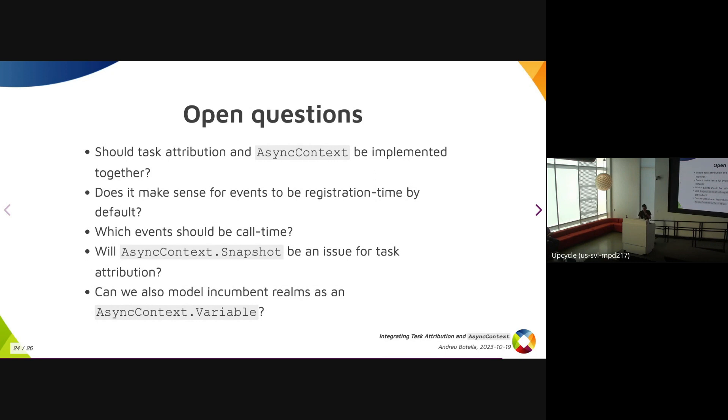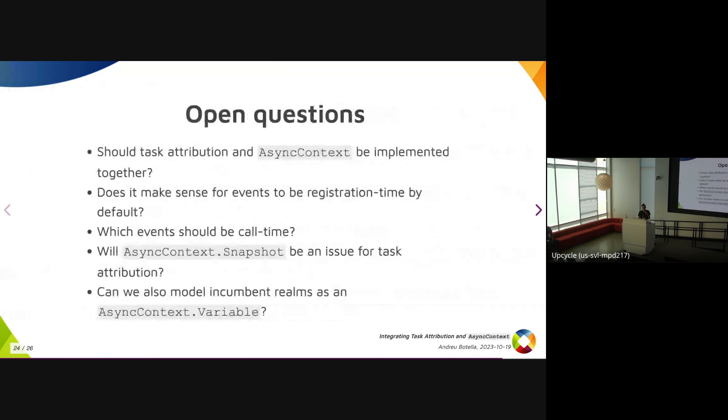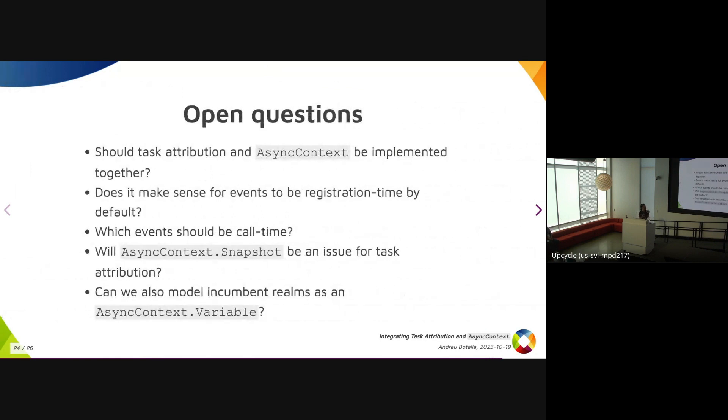Which events should be call-time? Is it just these two that we saw here? Because if task attribution needs and finds another use case that you would want to implement, and you also have async context which makes things very much observable, that would not be able to be changed after the fact. That would become a web reality.